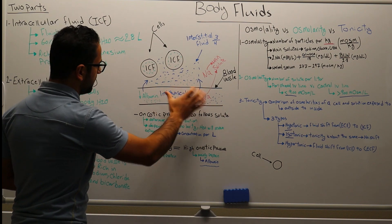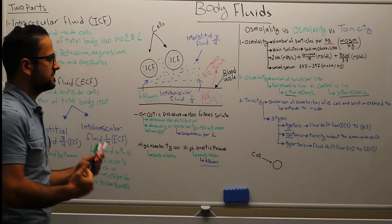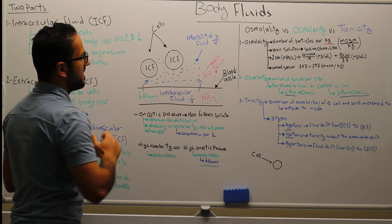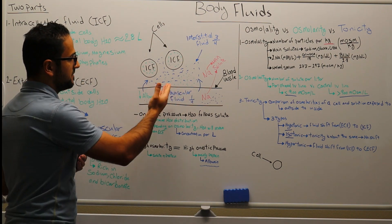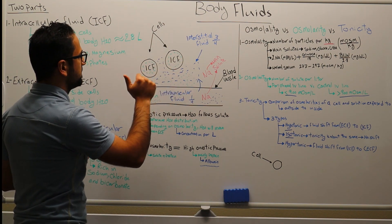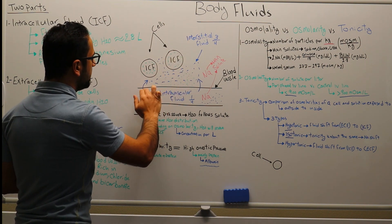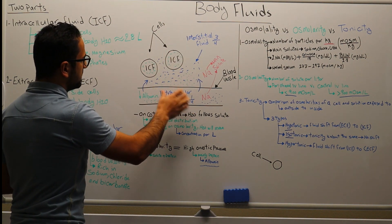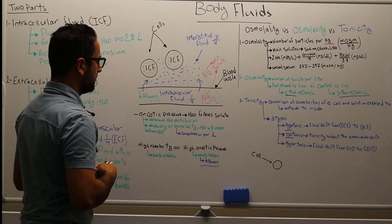For example, if we have a higher concentration of solute in the intravascular fluid, what's going to happen is that water will be moving into the intravascular fluid. Vice versa, if there is a higher concentration of solute in the interstitial fluid, water will be moving out from the intravascular fluid to the interstitial fluid.